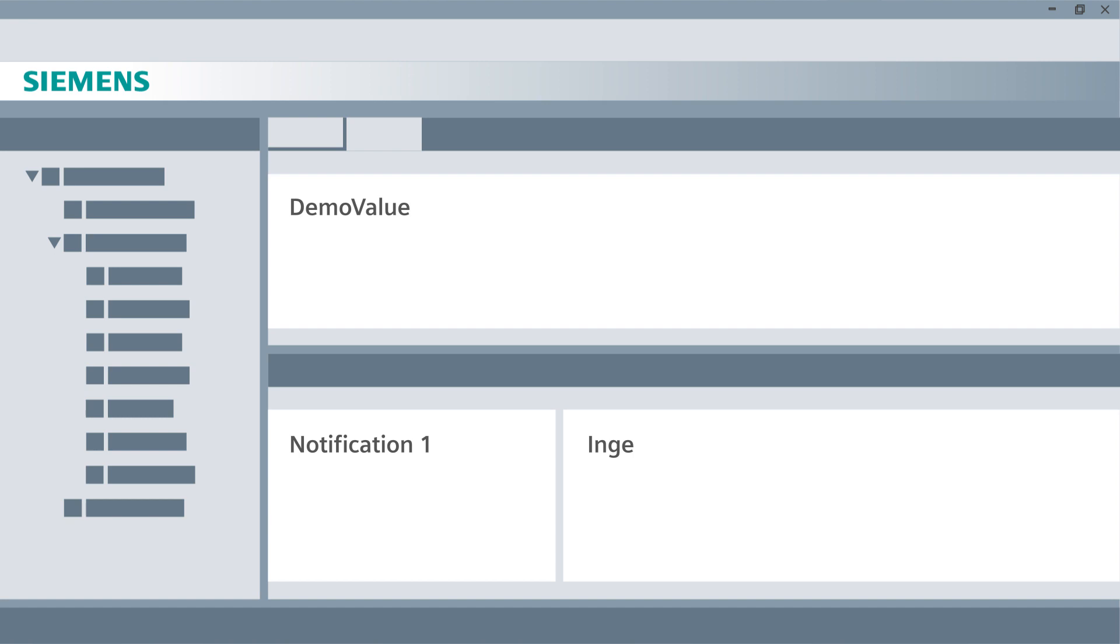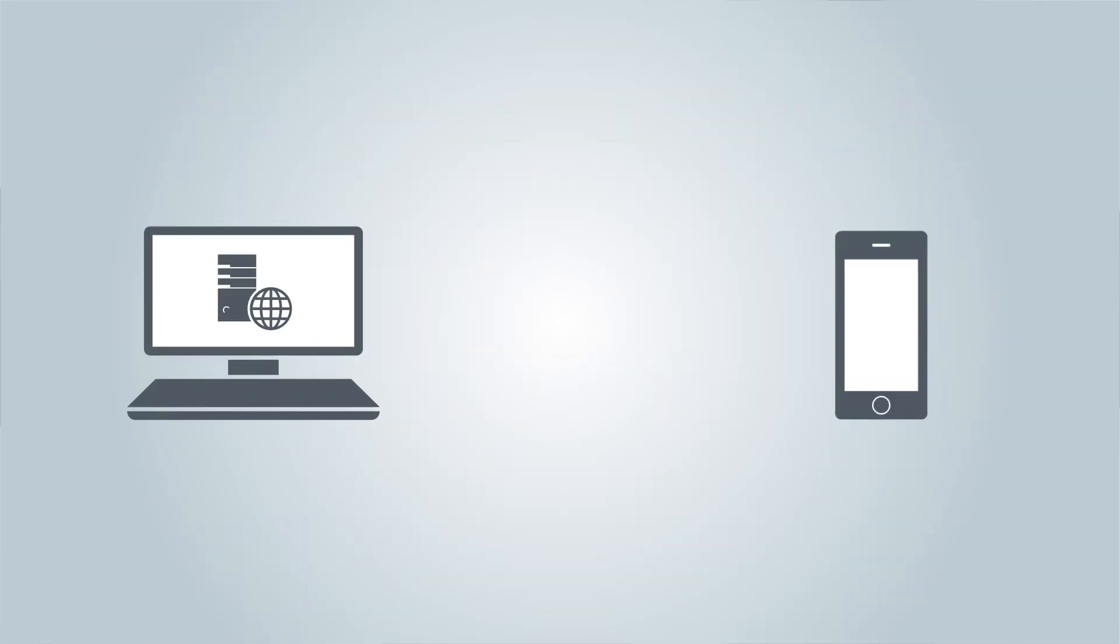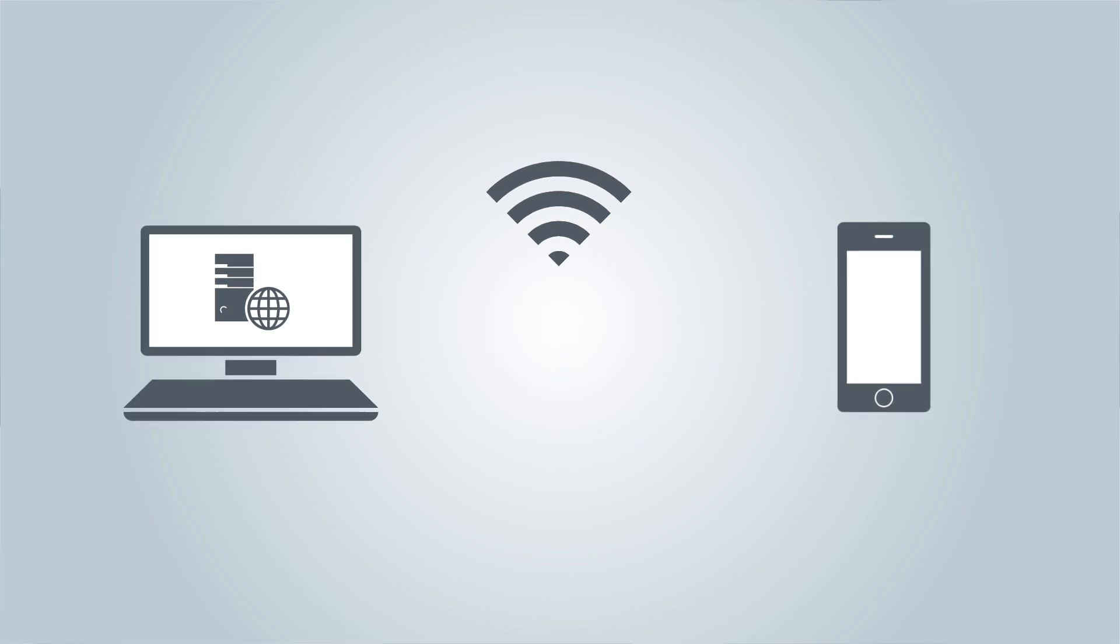The configuration of the server occurs web-based with the easy-to-use and integrated configuration tool. The SIMATIC Notifier server and the Notifier app communicate via Wi-Fi, whereby industrial security standards are supported.